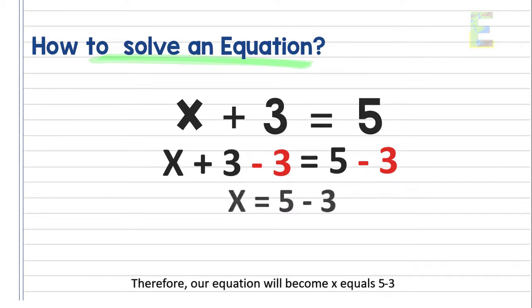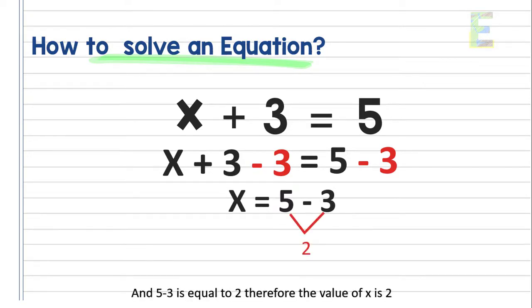Therefore, our equation will become x equals 5 minus 3. And 5 minus 3 is equal to 2. Therefore, the value of x is 2.